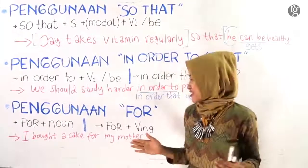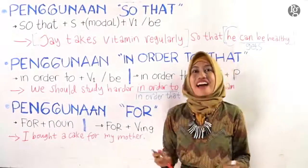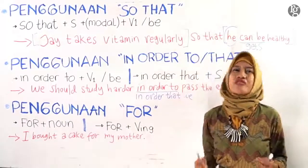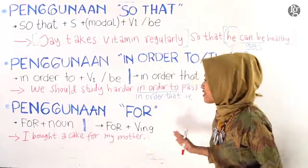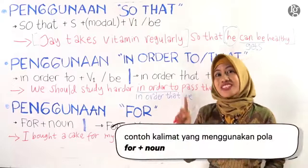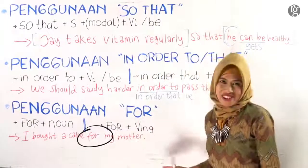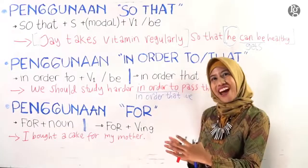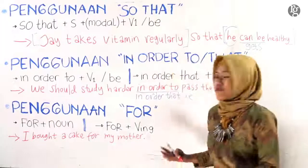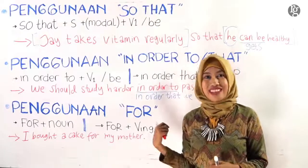Di sini dari contoh kalimatnya saja sudah berbeda dengan contoh kalimat yang ada pada penggunaan konjungsi 'so that' dan penggunaan konjungsi 'in order to' atau 'in order that'. Yaitu, pada kalimat ini, klausannya cuma ada satu. Dalam satu kalimat, klausannya hanya satu. Yaitu: I bought a cake for my mother. Jadi, 'for'-nya hanya untuk menghubungkan sebagai keterangan di sini. Jadi, saya membeli kue untuk ibu saya.